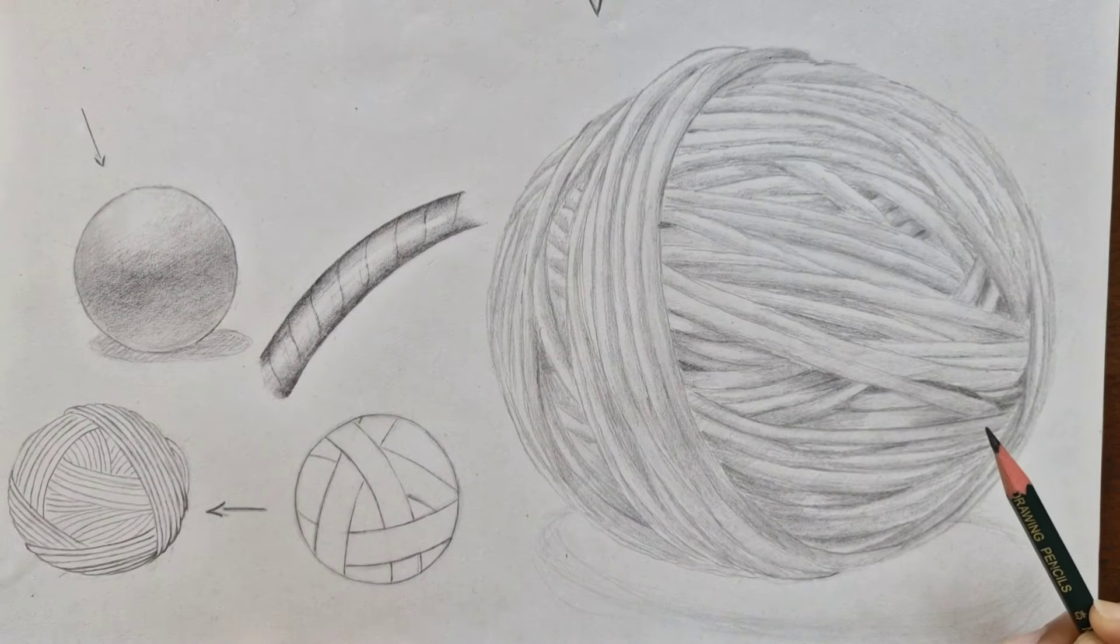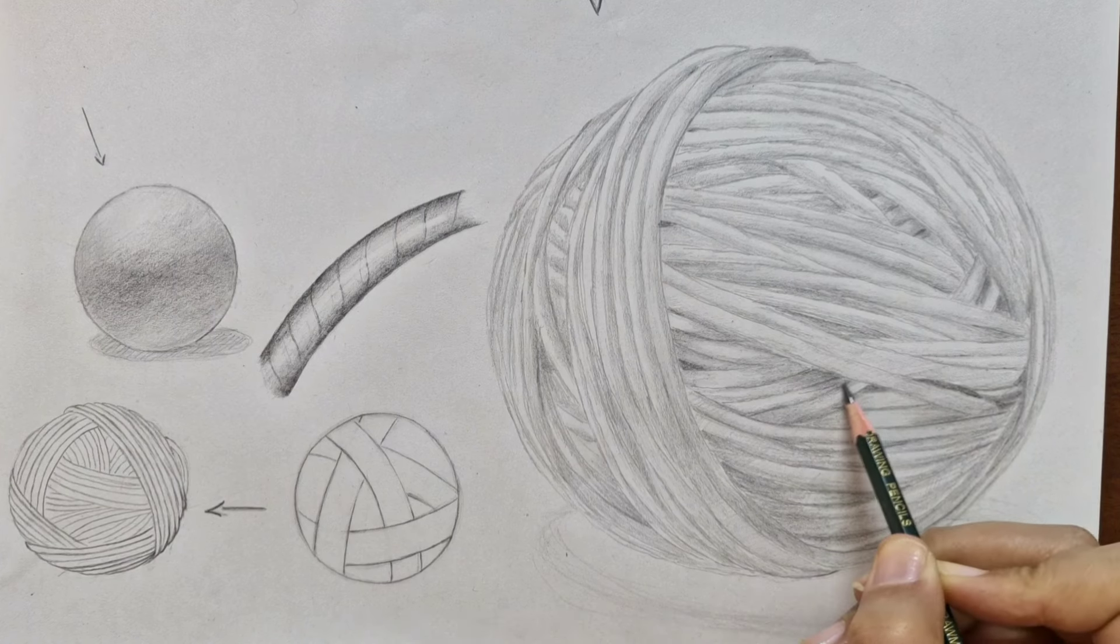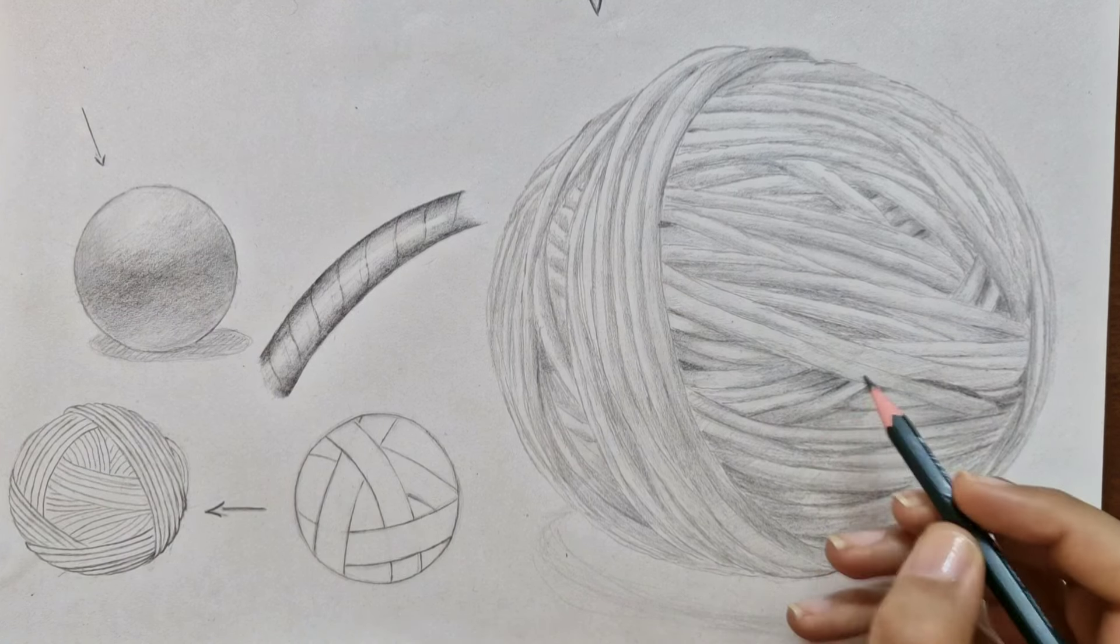Now we're going to add a second layer with a darker pencil like a B or 2B. This will help to really define the shadows and create more depth.